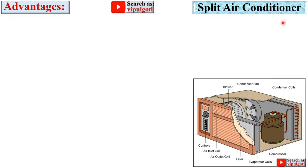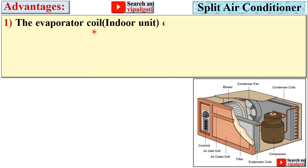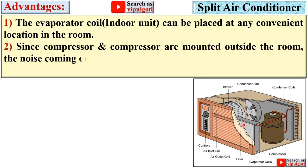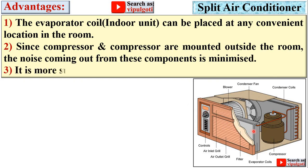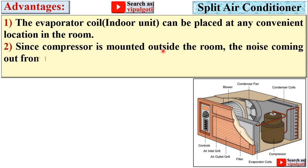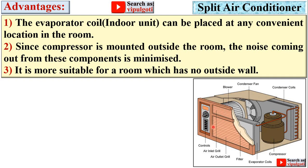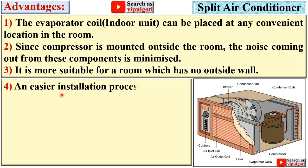Advantages of the split air conditioner compared to the window air conditioner: the evaporator coil (indoor unit) can be placed at any convenient location in the room, whereas with a window AC you must place it only in a window. Since the compressor is mounted outside the room, noise is minimized, whereas in a window AC the compressor is inside the room causing more noise. It is also more suitable for a room with no outside wall, and installation is easier.